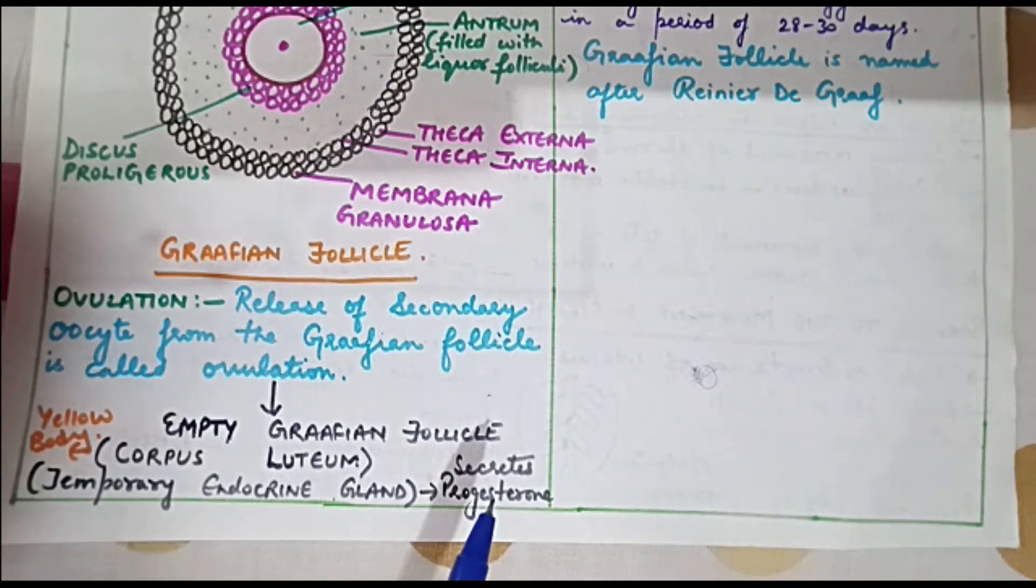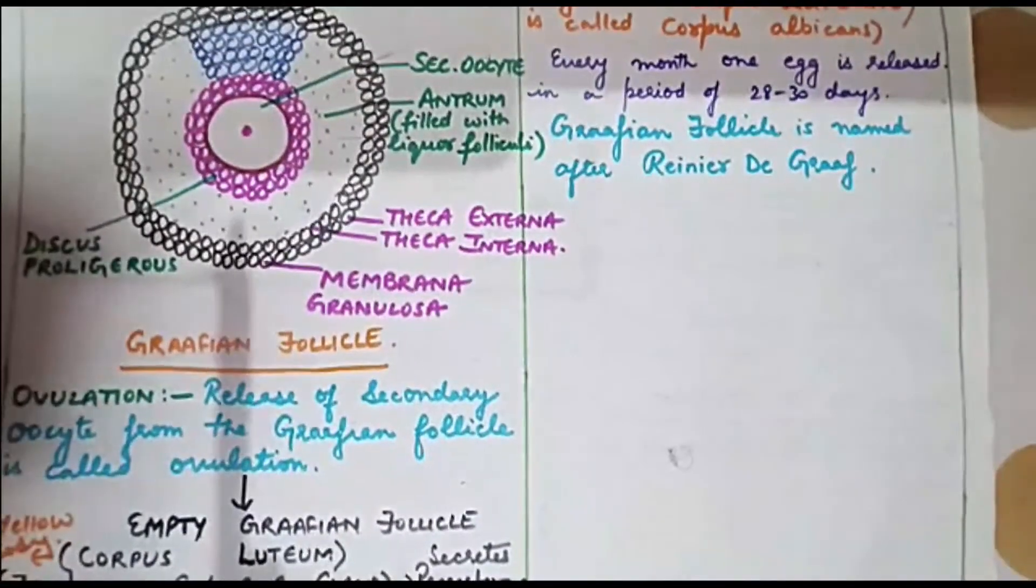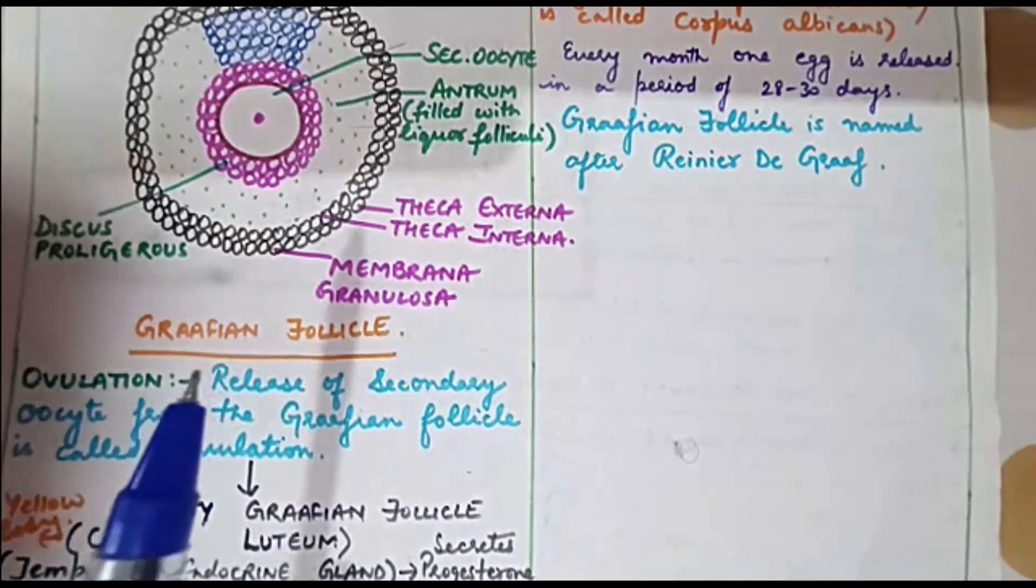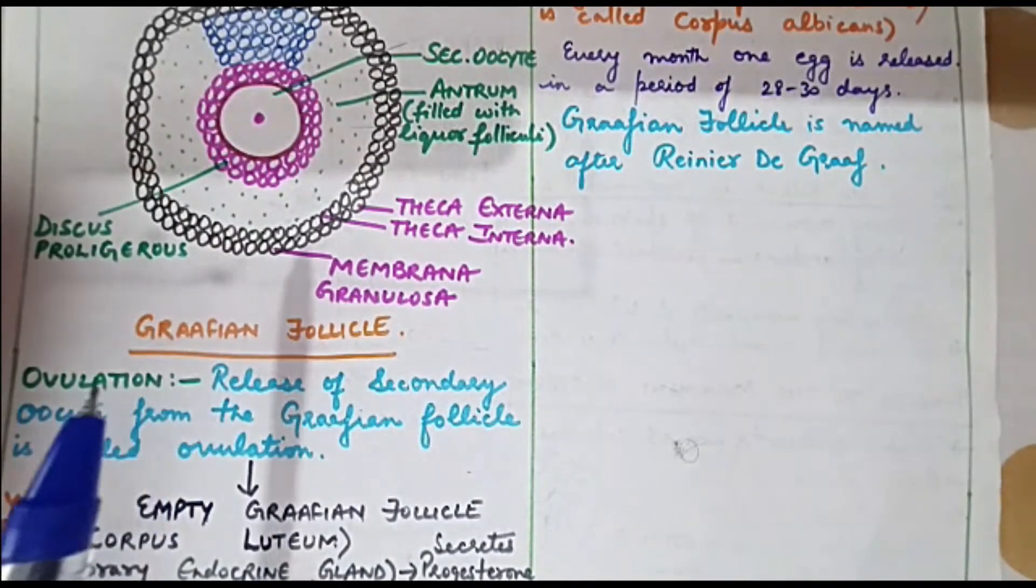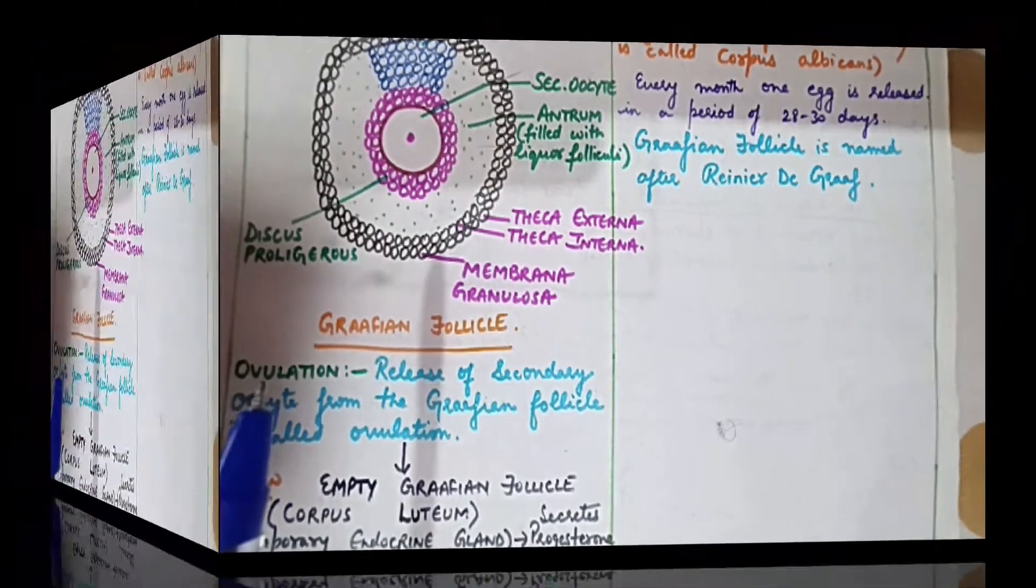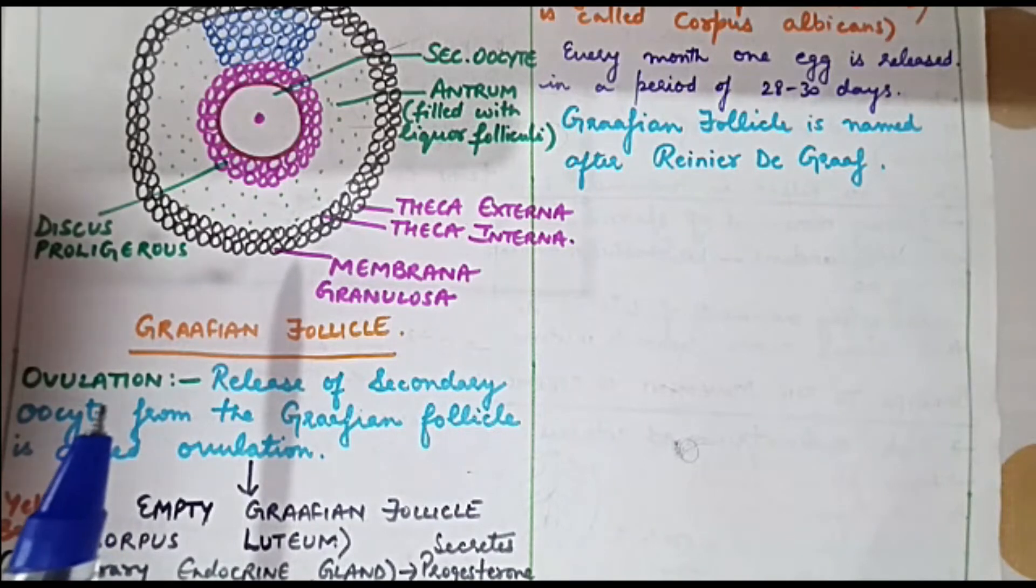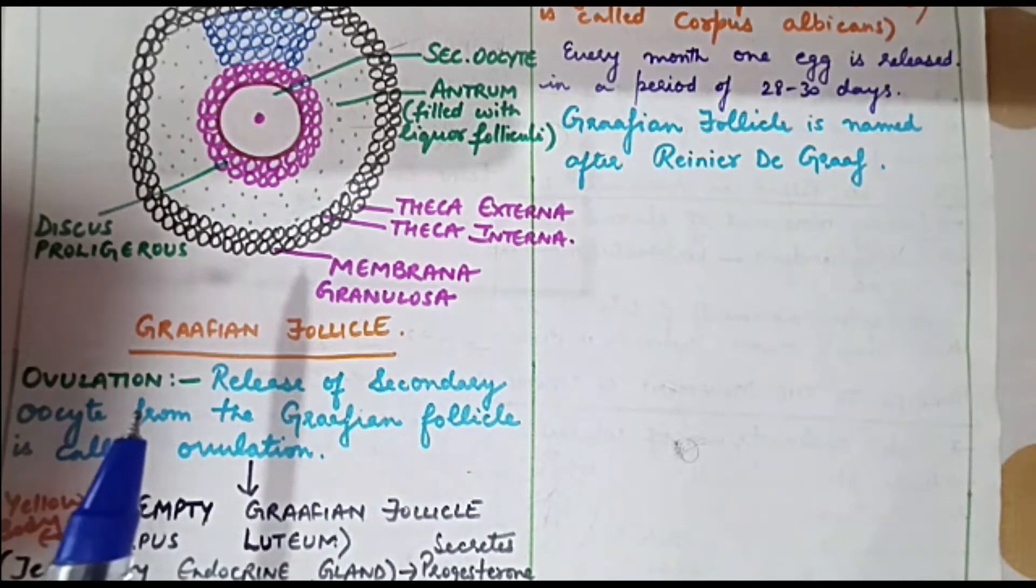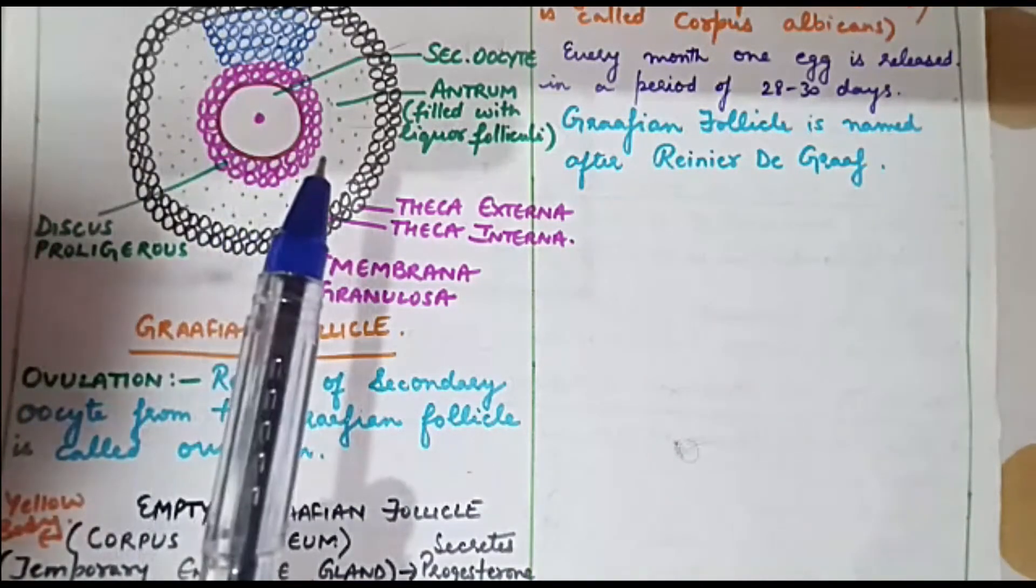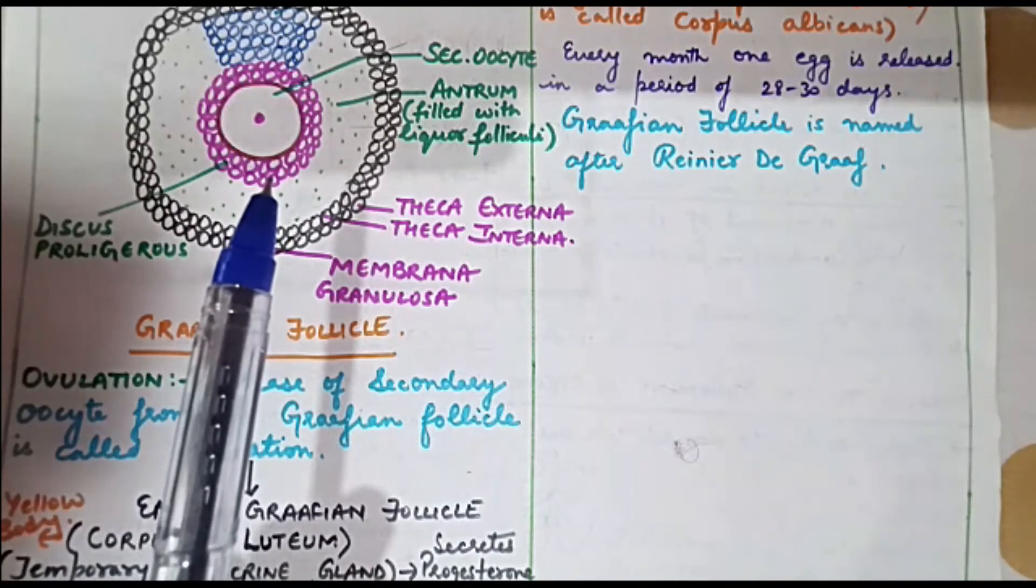The secondary oocyte released from the Graafian follicle will enter into its next phase if it receives the sperm. The union of sperm and secondary oocyte will result in the formation of zygote, and this phenomenon is known as fertilization. But if secondary oocyte does not receive any sperm, then it will degenerate.